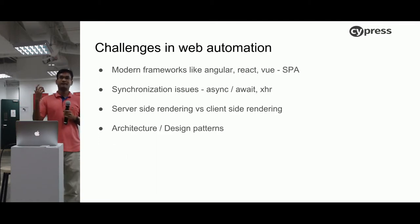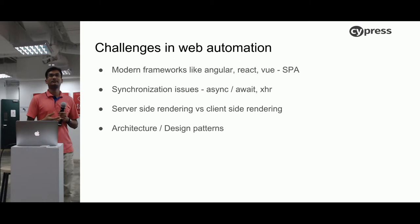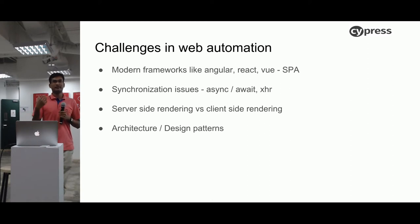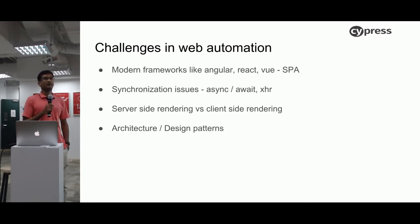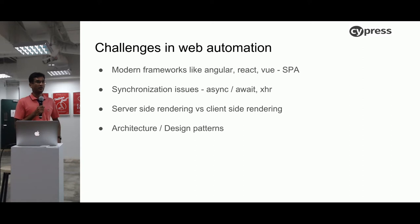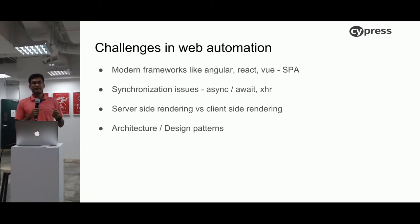Looking back, the web used to be mostly server-based rendering — a lot happened on the server, very little happened on the client, and the server sends an HTML page and the browser just displays it. But now we've come to an advanced state where we can do everything from the client side itself. The server is just rendering the initial page, and the client, using JavaScript, makes XHR requests and a lot of other requests. But Selenium RC and WebDriver were built long back — ten, twelve years ago — so they weren't really catching up with the latest happenings in web automation.